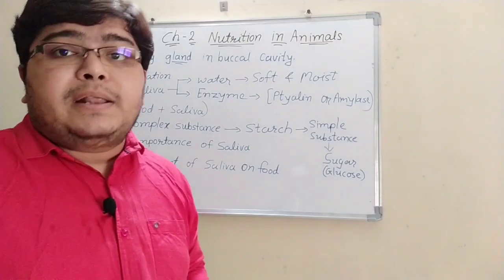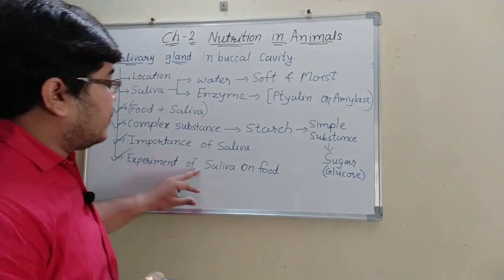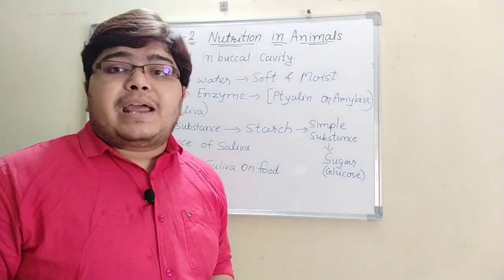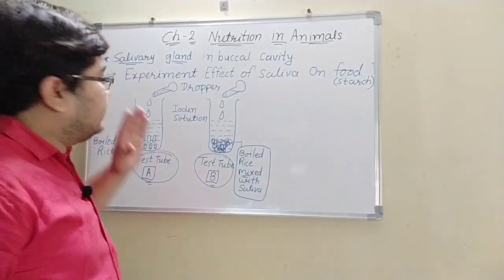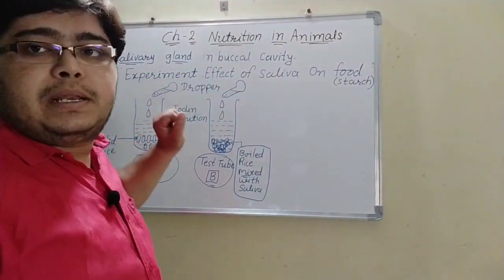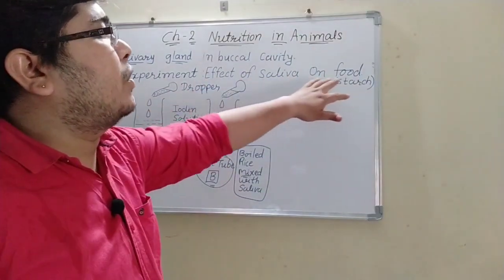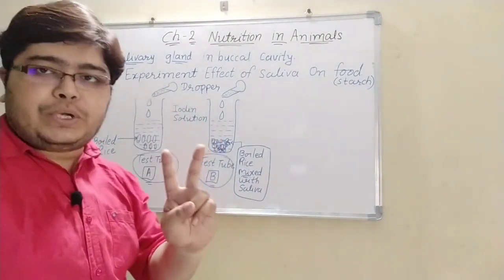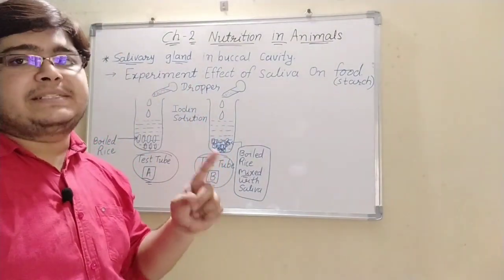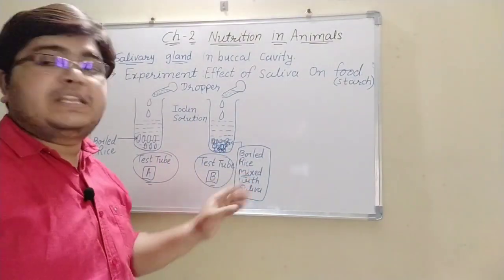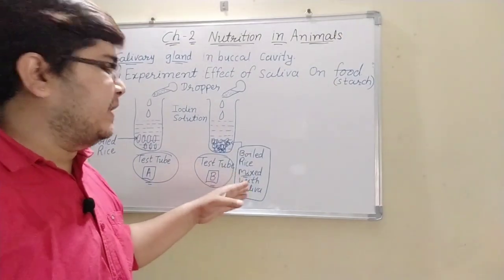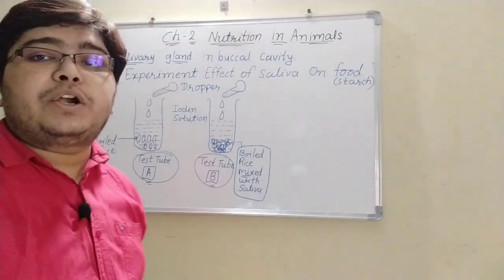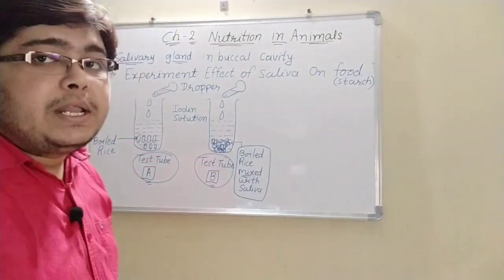Our next topic is the experiment of saliva on food. In this experiment, we take two test tubes and two droppers. Test tube A contains boiled rice, and test tube B contains boiled rice mixed with saliva — that is, chewed rice. Both droppers contain iodine solution.